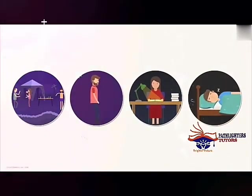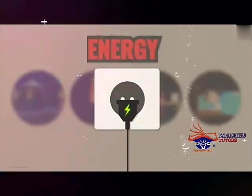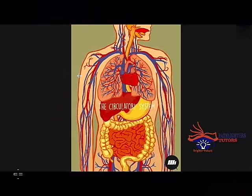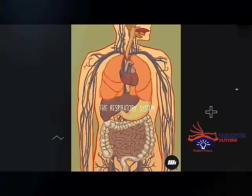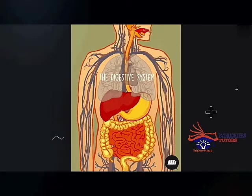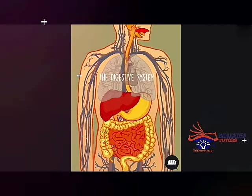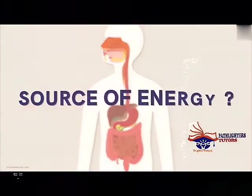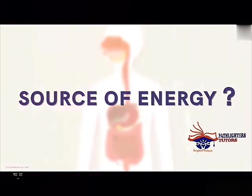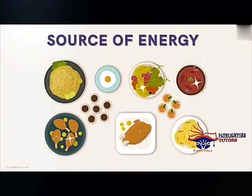Whenever you're dancing, walking, studying, or even having a nap, your body is always in constant need of energy. Similarly, the body systems are always in constant work and are in need of energy — the circulatory system, the respiratory system, the digestive system, the nervous system, the skeletal system, the muscular system — they all require energy. So where do we derive this energy from?